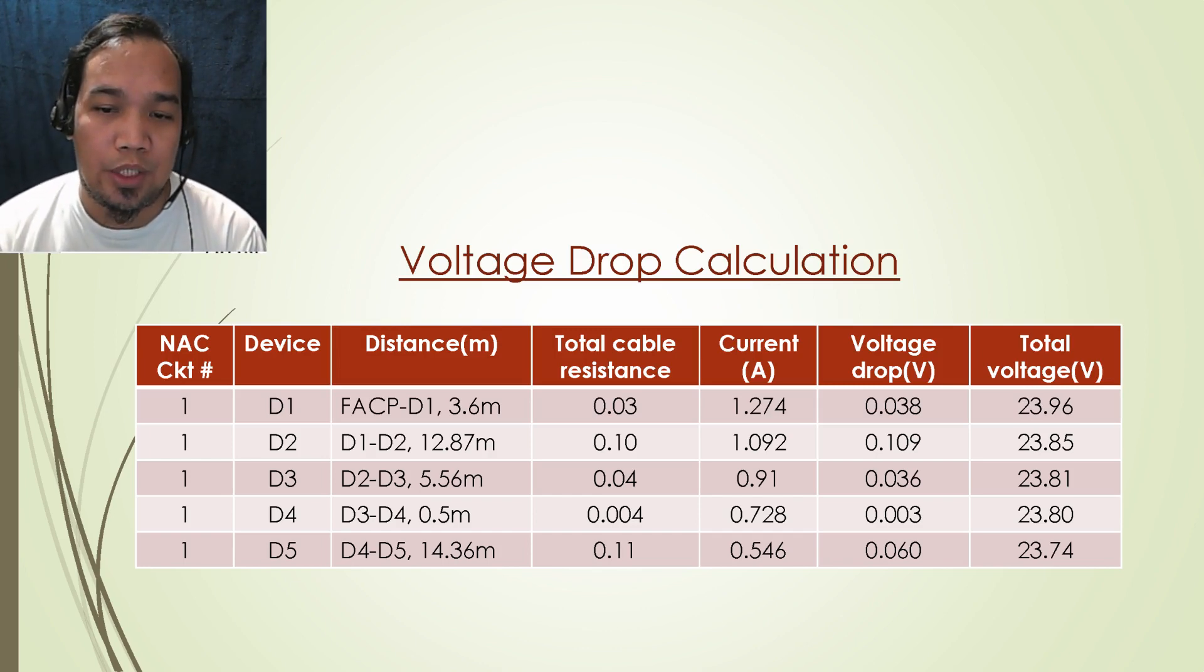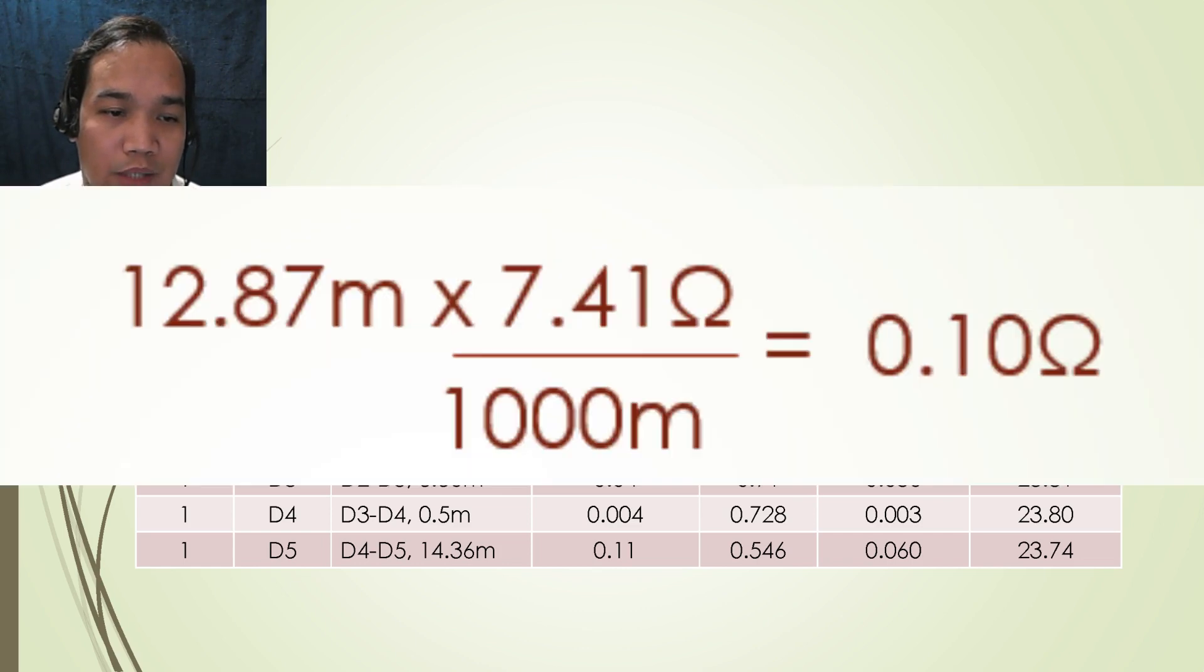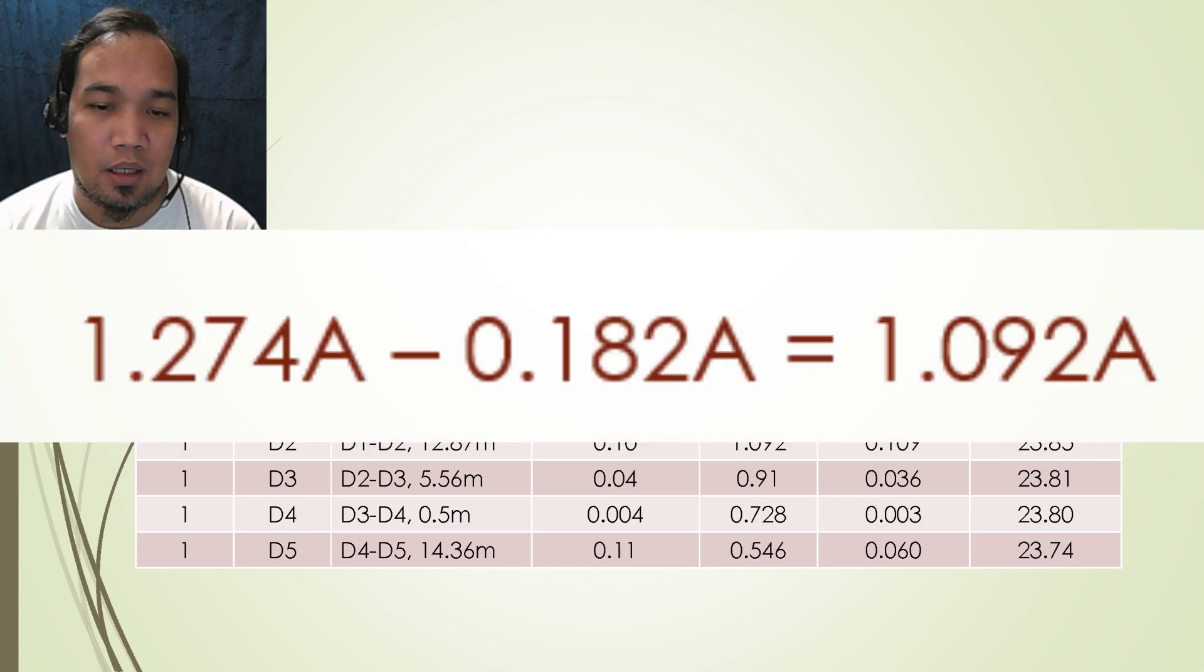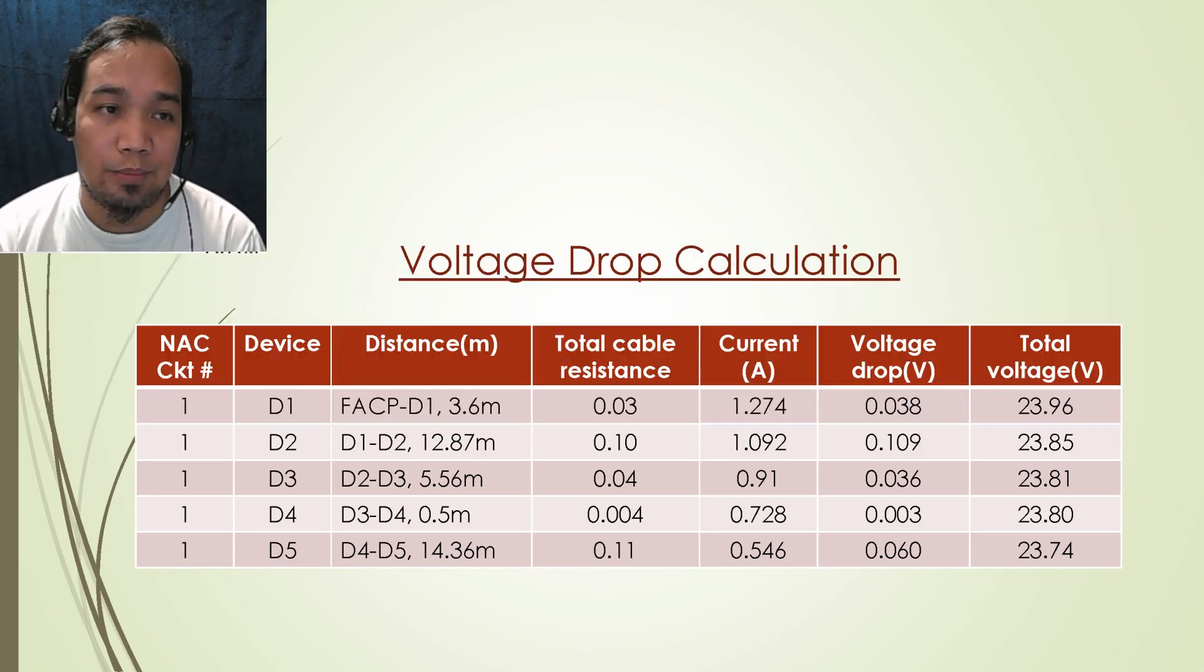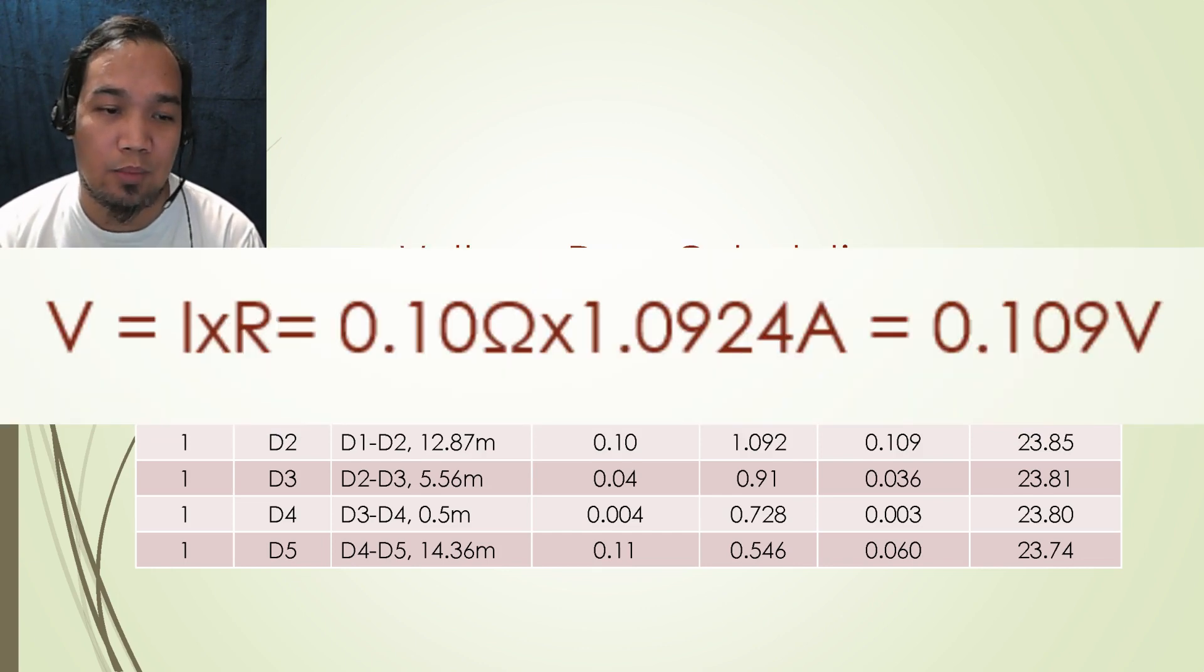For the next row which is for the second device, the distance from the first device to the second device is measured. With the same data sheet of cable, a value of 0.10 ohms is calculated. For the current, the current to be used can be calculated by deducting the current of first device from the total current, which results to a value of 1.092 ampere and 0.109 volts voltage drop using Ohm's law.